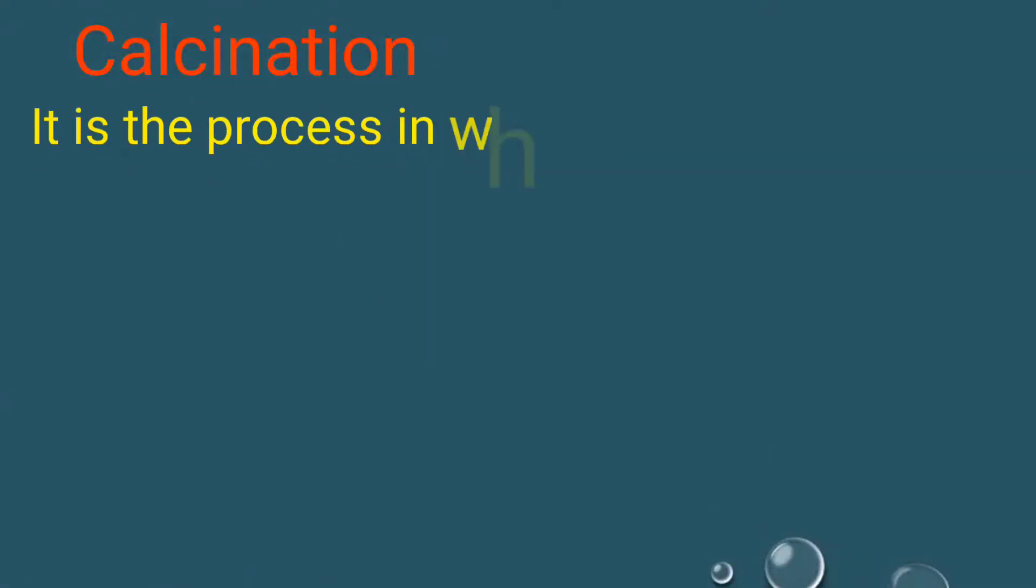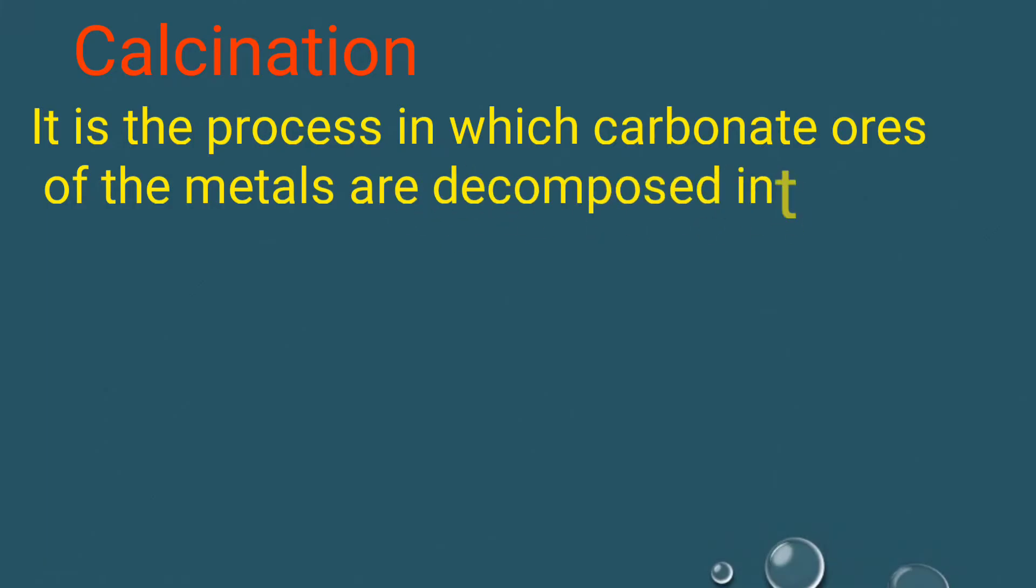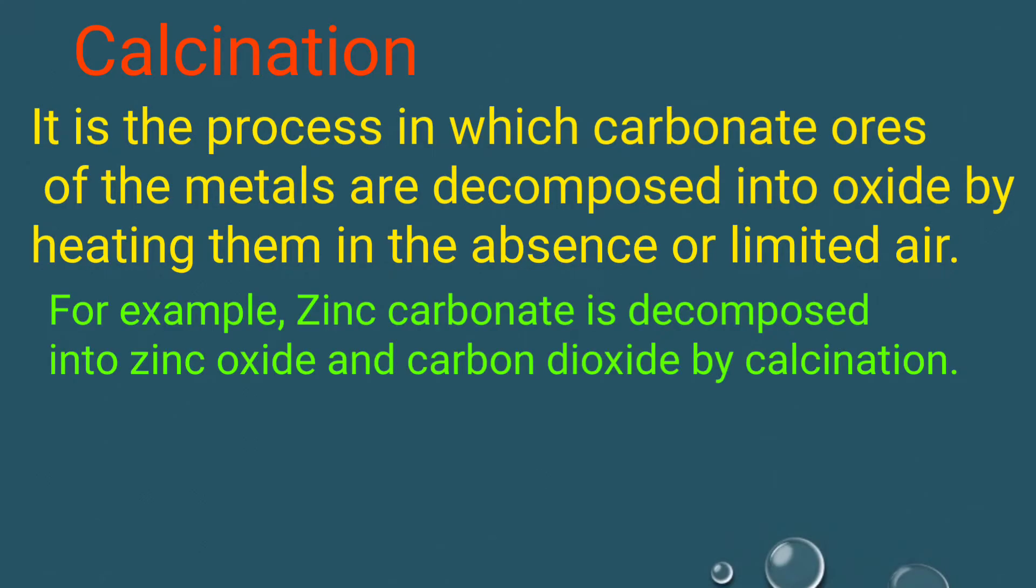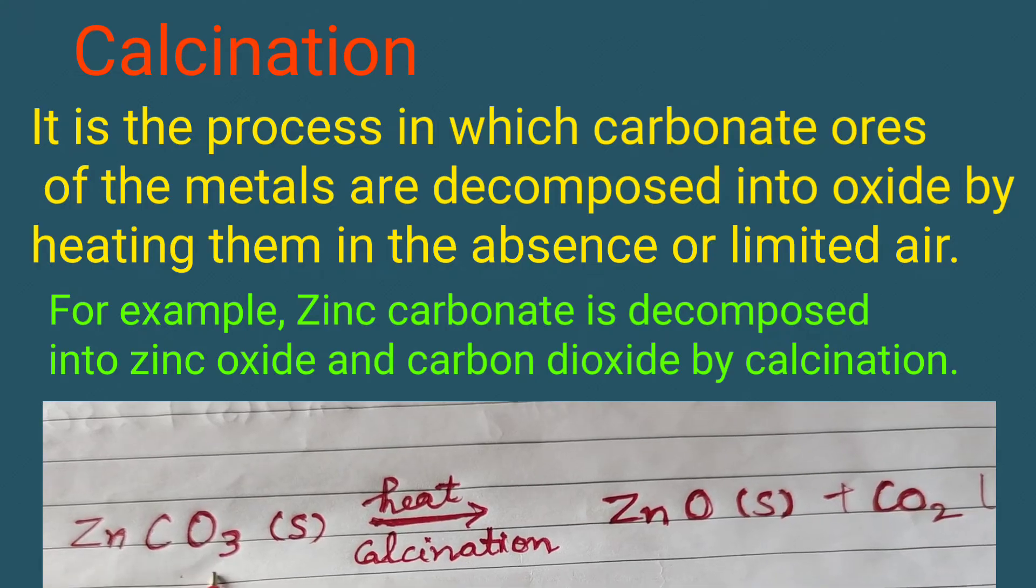Calcination is the process in which carbonate ores of metals are decomposed into oxide by heating them in the absence or limited air. For example, zinc carbonate is decomposed into zinc oxide and carbon dioxide by calcination.